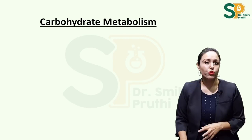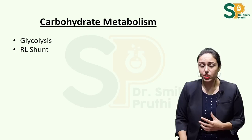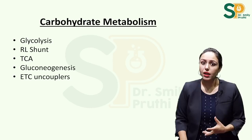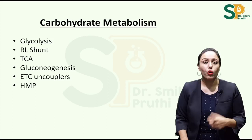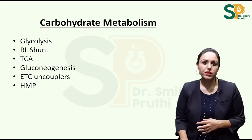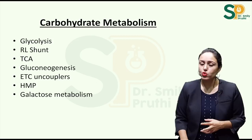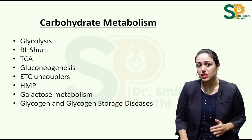In carbohydrate metabolism, study glycolysis, the RL shunt (Rappaport-Luebering shunt or cycle), occurring only in RBCs where net ATP production is zero. Also do the TCA cycle, gluconeogenesis, and uncouplers in the ETC. For HMP shunt, just know phase 1, what phase 2 produces, and the final end products. You can also learn the markers of B1 and B2 deficiency — transketolase for B1 and glutathione reductase for B2.